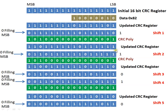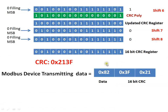In shift 3 the LSB is 0, so we continue the shift operation. In shift 4 the LSB is again 1, so we perform XOR again. This process continues through all 8 shifts. After performing shift 8, the resultant CRC register value is the CRC value, which is 0x213F in hexadecimal. This is the example we have taken for one byte.